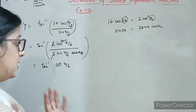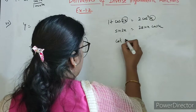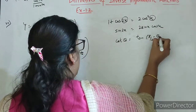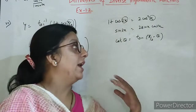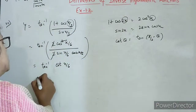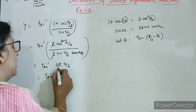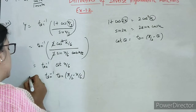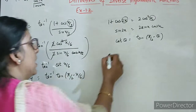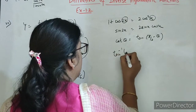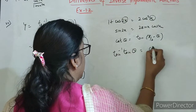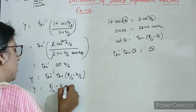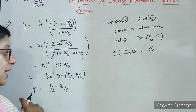Now the problem is ki cot nahi chahiye, aur cot ko hume tan mein change karna hai. Toh cot theta ko we can write tan of pi by 2 minus theta. So right here: cot ko likhke tan of pi by 2 minus x by 6. This is y. Now tan inverse tan theta is theta. So yeh y ho jayega pi by 2 minus x by 6 using this property.